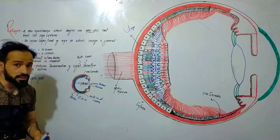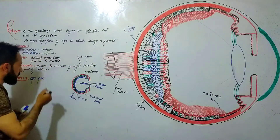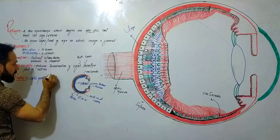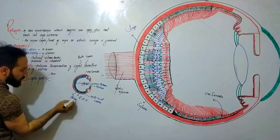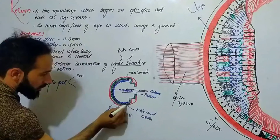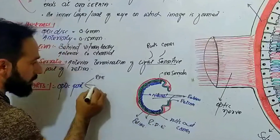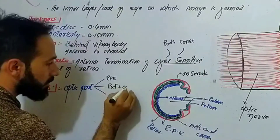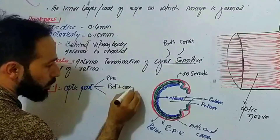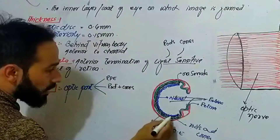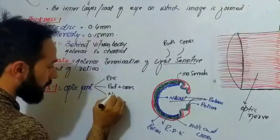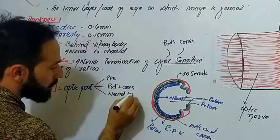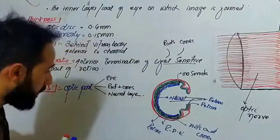The optic part of the retina will contain all three layers: the retinal pigment epithelium, the rods plus cones, and the neural layer.